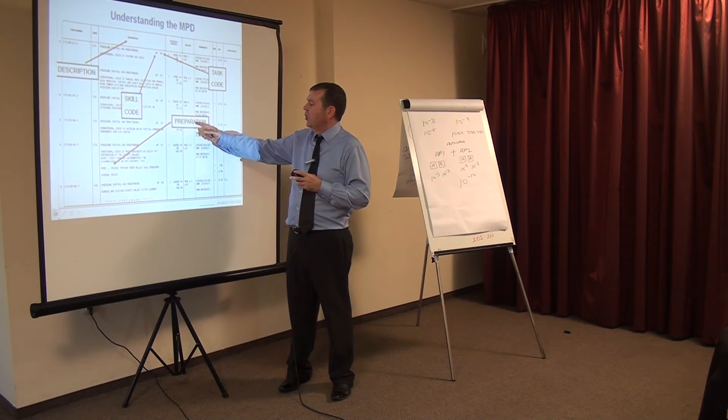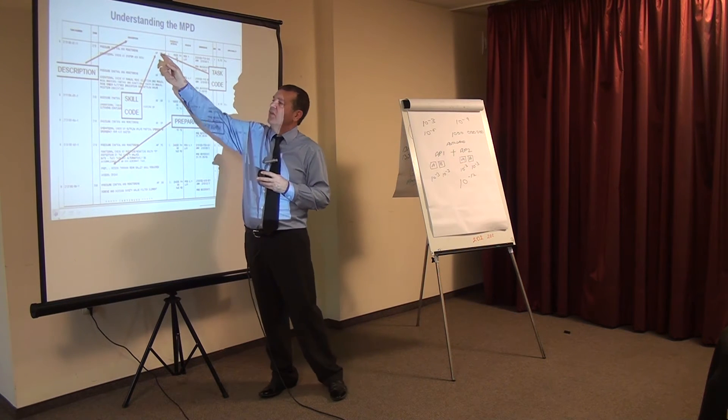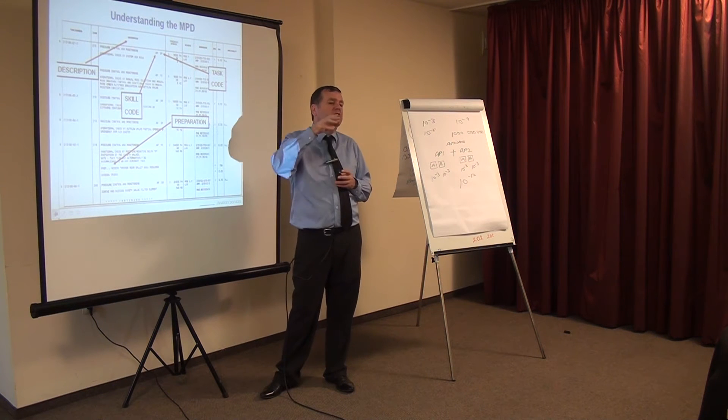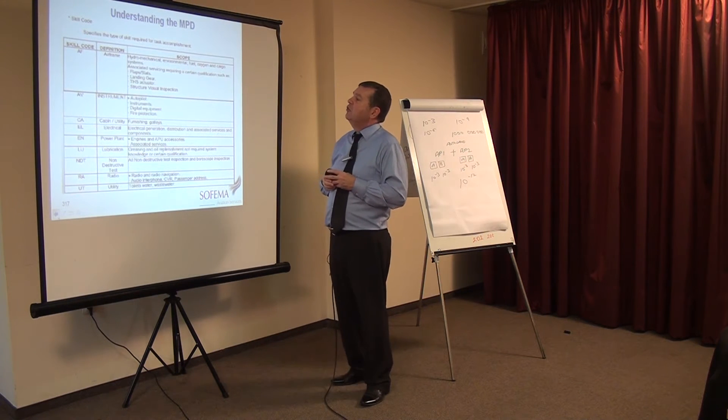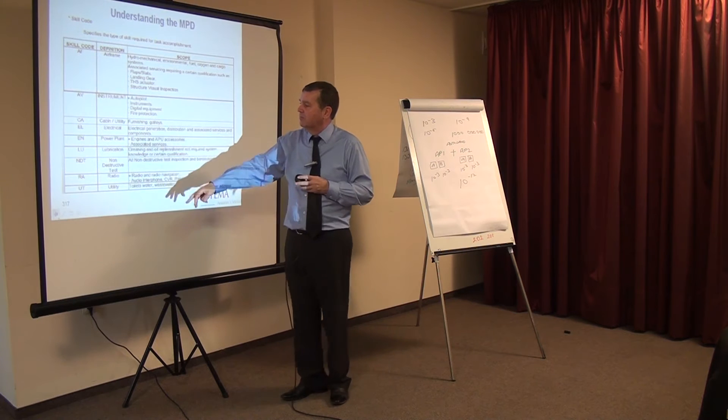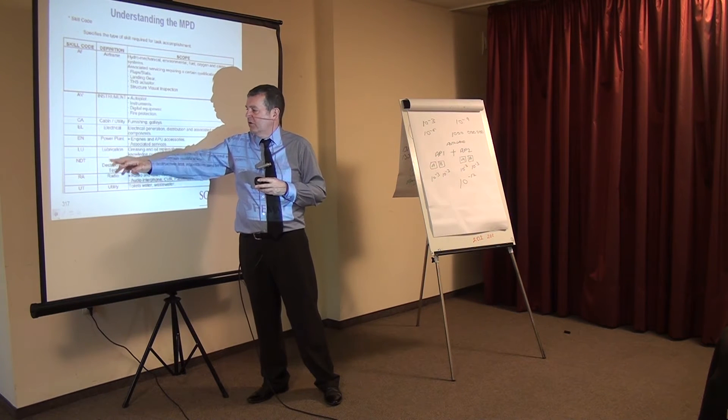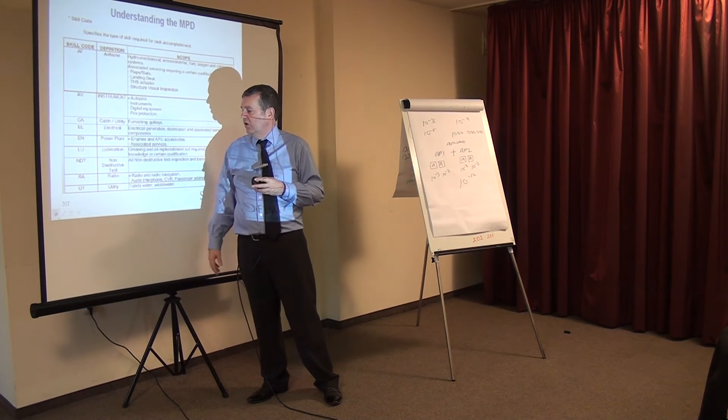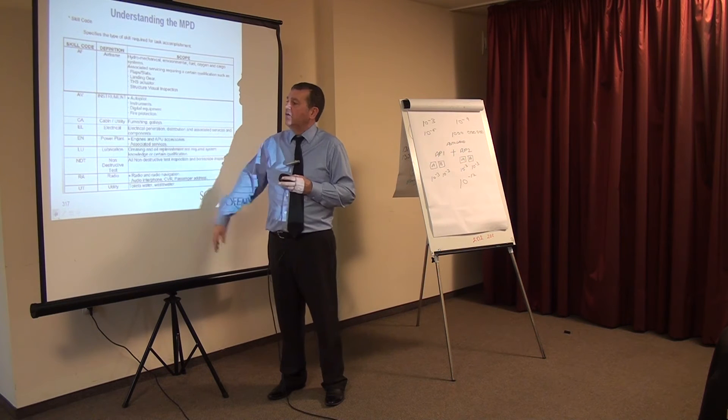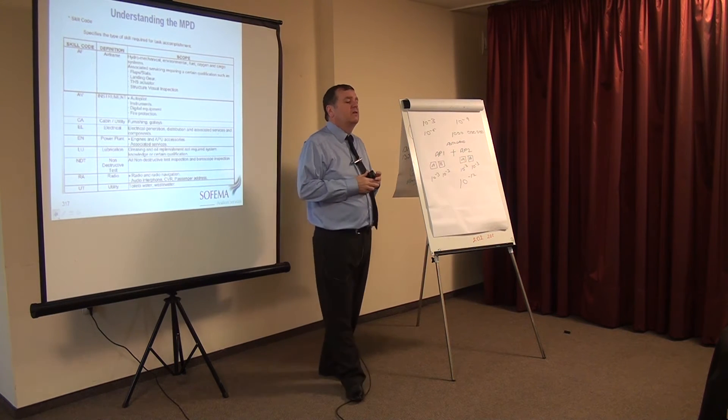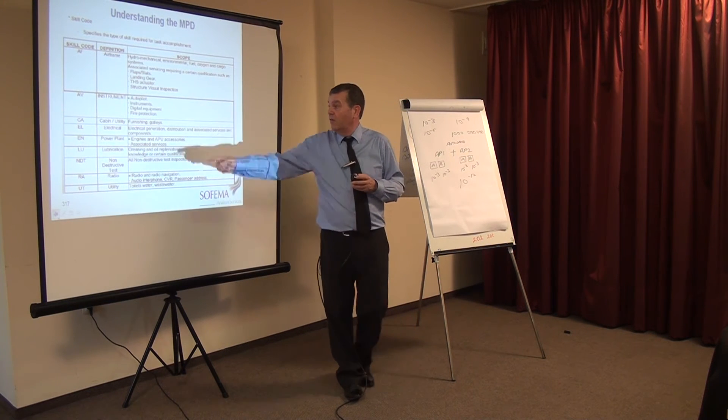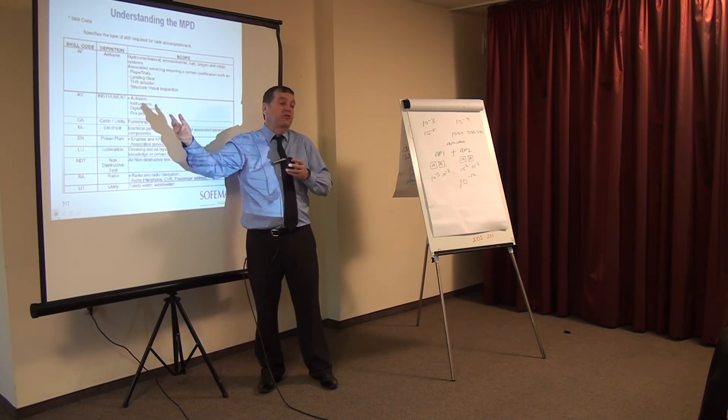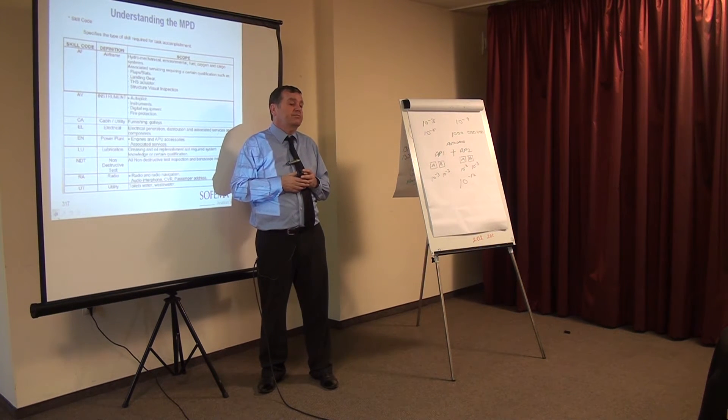Here we have the work that's required for the preparation. Here we have a task code, in this case, its operation. We will see this in more detail. Here we have a skill code: airframe, avionic, cabin, electrical, power plant, lubrication, non-destructive test, radio or utility. These are just terms that are used in the MPD document. It doesn't mean that we have different groups of people for each of these activities.